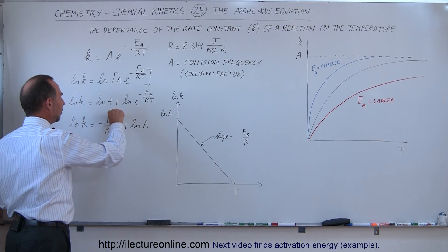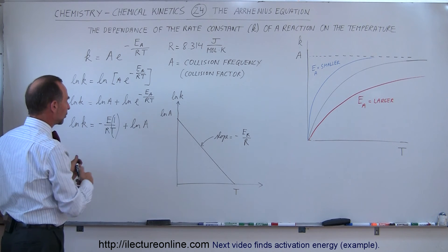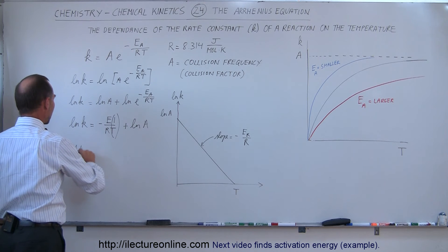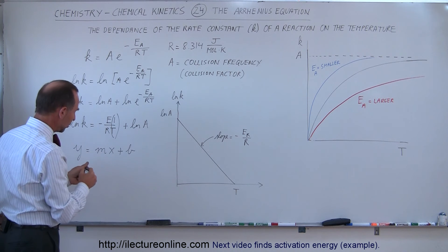So sometimes we like to write it like this, and so if we now graph this as an equation of 1 over T, this becomes like y is equal to mx plus b. It's now like a linear equation.